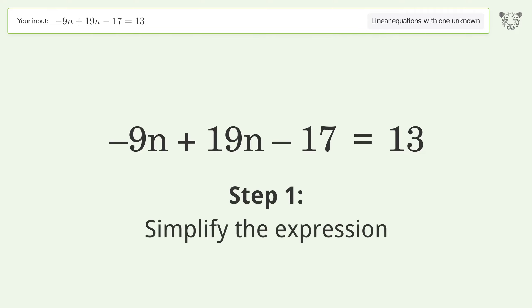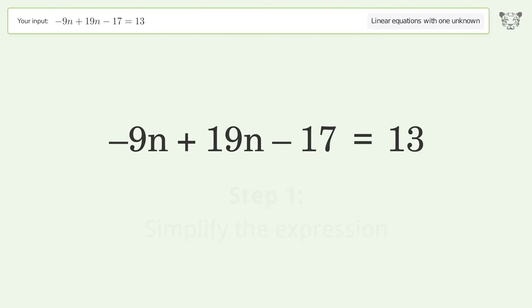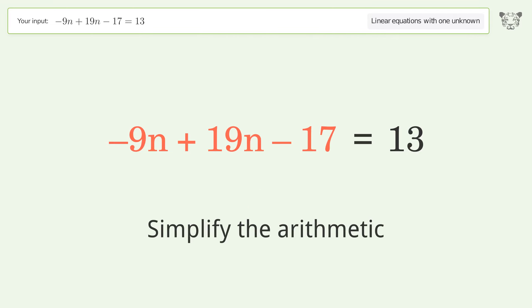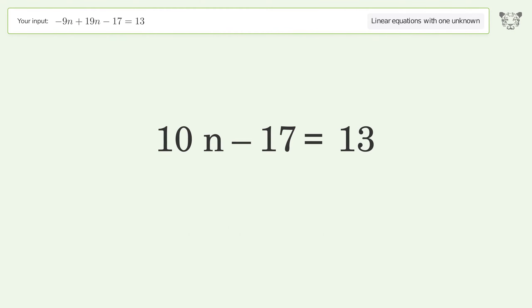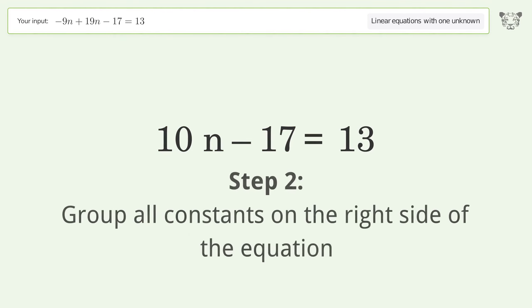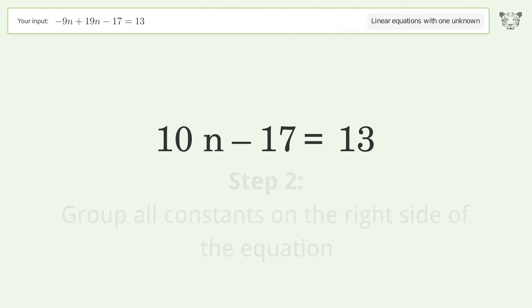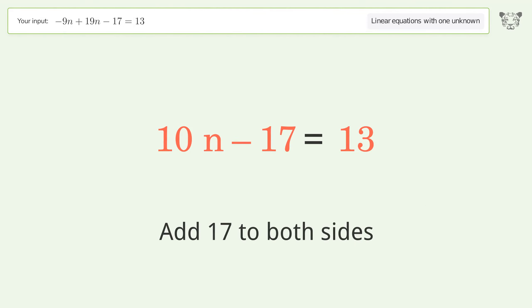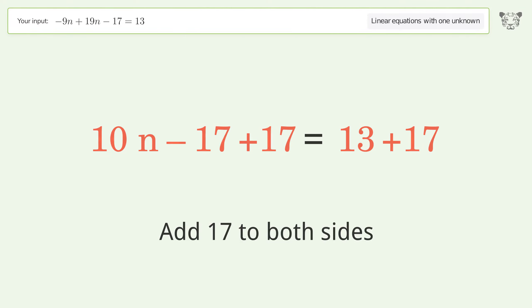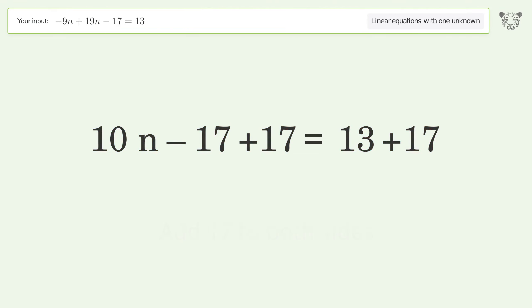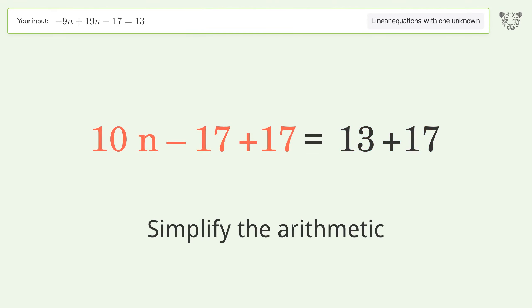Simplify the expression and simplify the arithmetic. Group all constants on the right side of the equation — add 17 to both sides. Simplify the arithmetic.